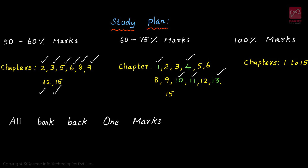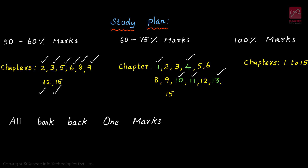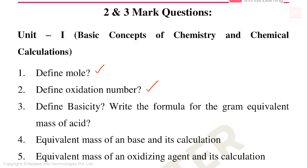Next, 11th standard chemistry golden questions unit-wise: 2 mark, 3 mark, and 5 mark. First, all units 2 mark and 3 mark, then all units 5 mark. Unit 1: Basic Concept of Chemistry and Chemical Calculation. Golden questions: define mole, define oxidation number, define basicity, write formula for gram equivalent mass of acid.